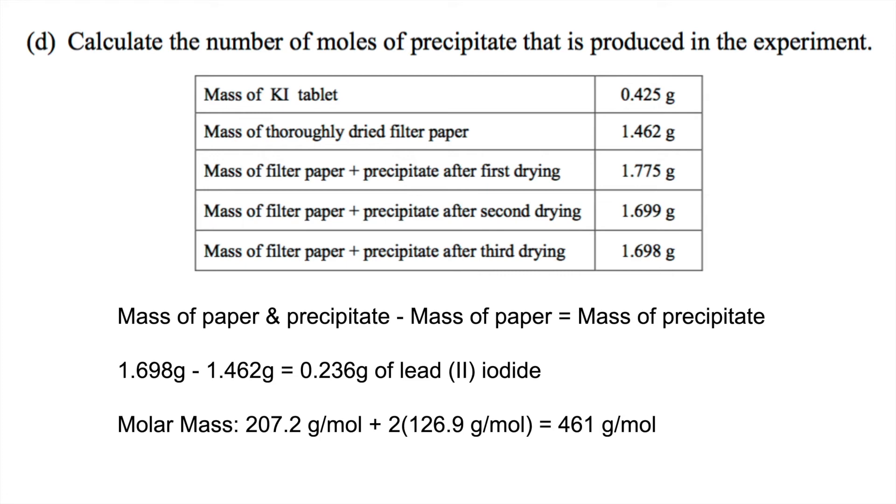The molar mass of lead-to-iodide is the mass of lead, which is 207.2 grams per mole, plus the two iodide ions, which are each 126.9 grams per mole. And you can get these numbers from a periodic table. This becomes 461 grams per mole. Now we have to divide the mass of the lead-to-iodide divided by the molar mass to get the number of moles. If you use your calculator dividing those two numbers, you should get 5.12 times 10 to the negative 4 moles of lead-to-iodide.